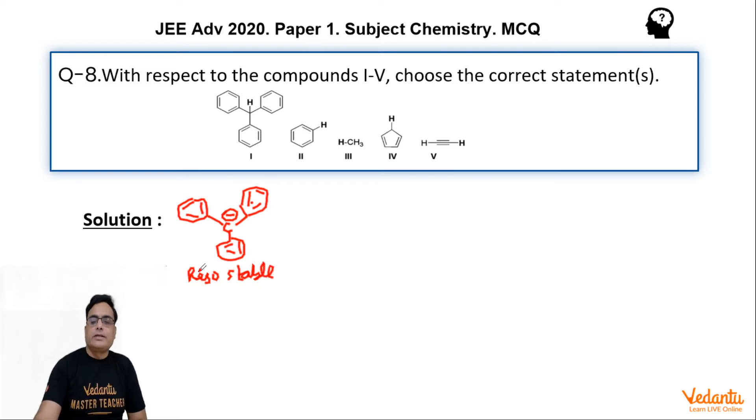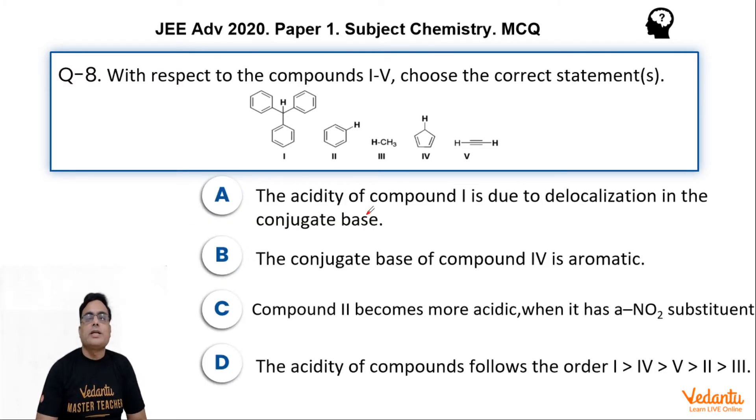At a time, the whole structure is not flat and planar, but this negative charge is delocalized and resonance stabilized. Conjugate base means you remove H, after removing H you will get one anion, that anion is the conjugate base. That conjugate base is resonance stabilized or delocalized. So statement A is correct.